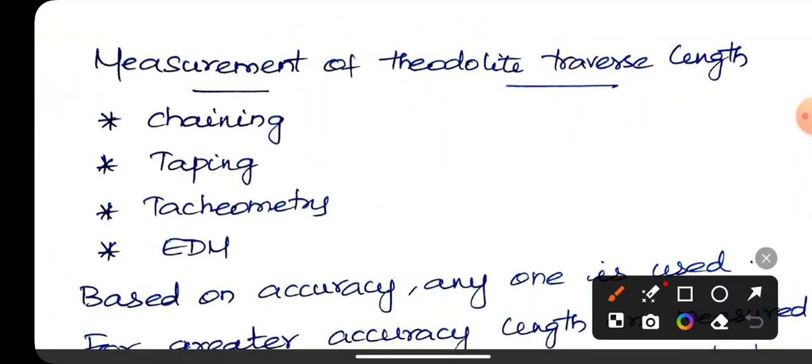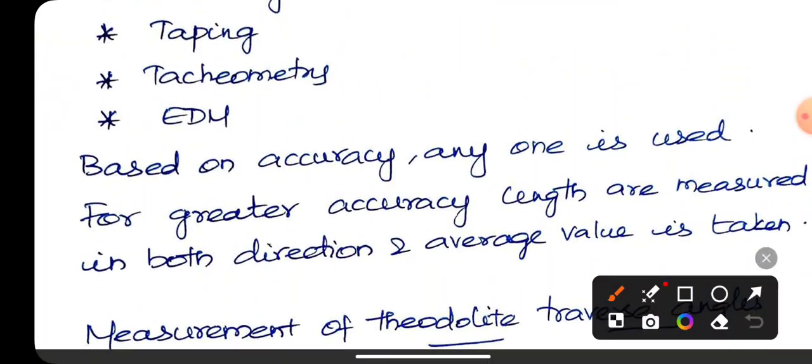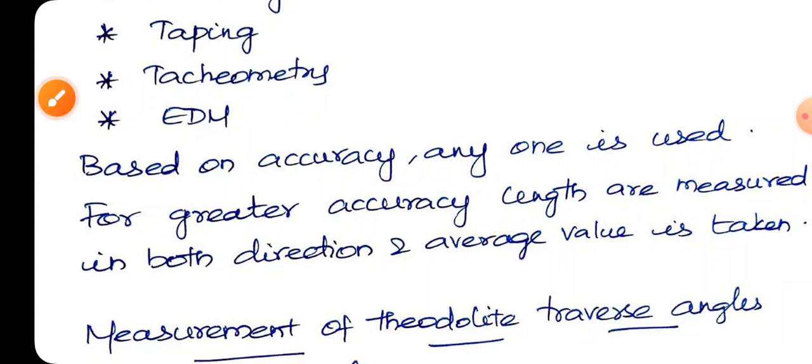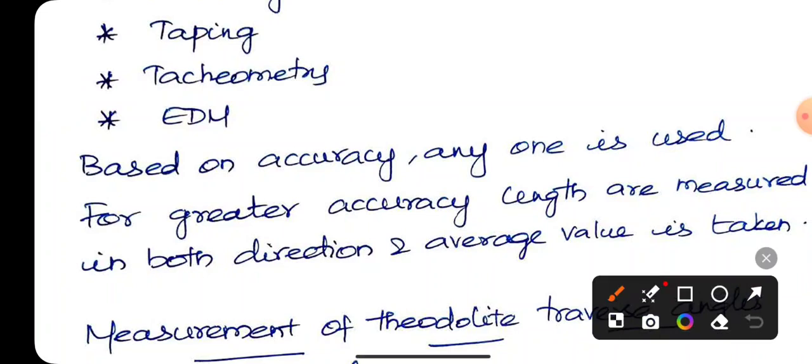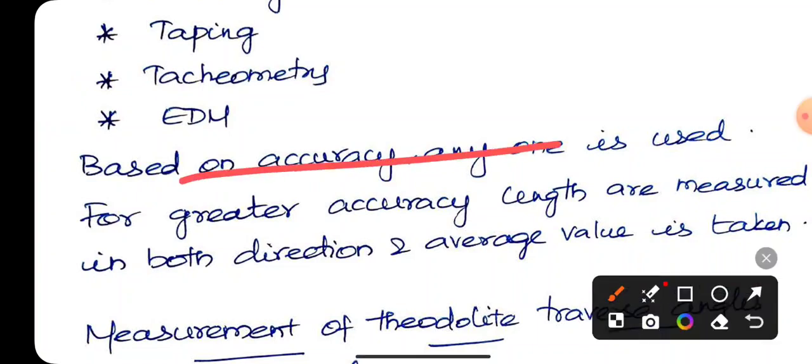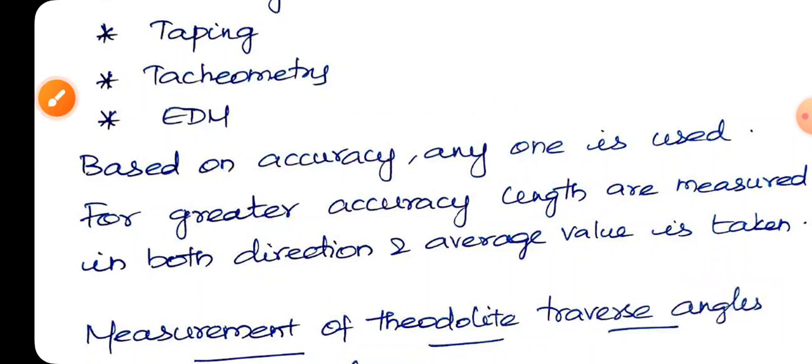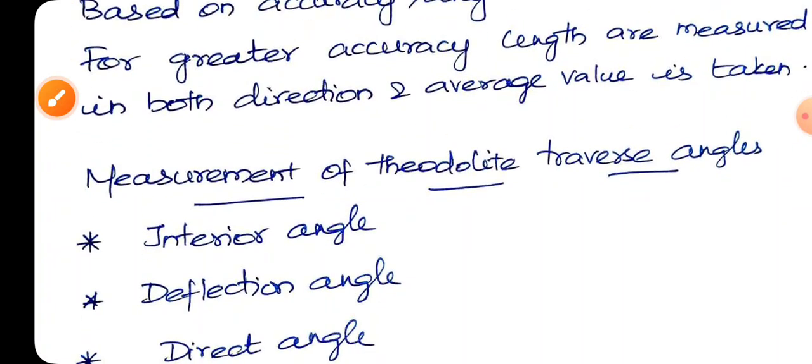Theodolite traverse length: chaining, taping, tachymetry, EDM. Based on accuracy. Anyone is used. Chain, tape. For greater accuracy, length is measured in both directions and average value is taken. Perfect accuracy is measured in both directions and average value is taken. So if you have a line, you can measure it. The total set will be averaged.